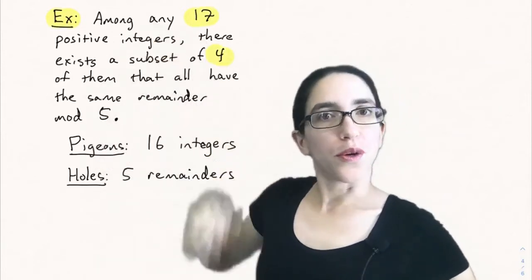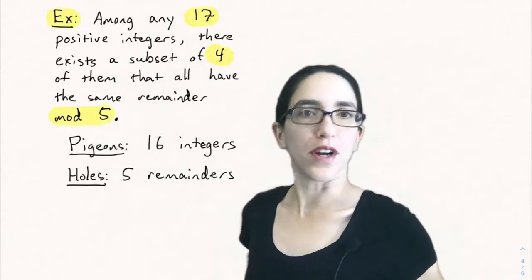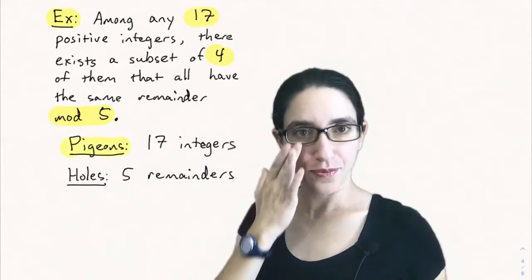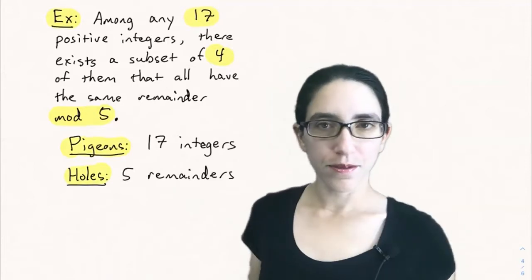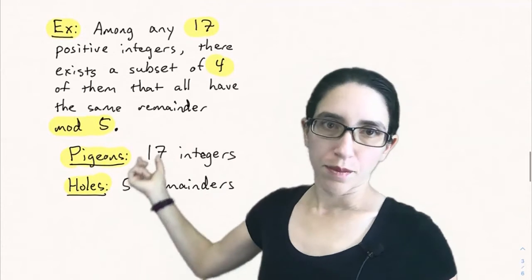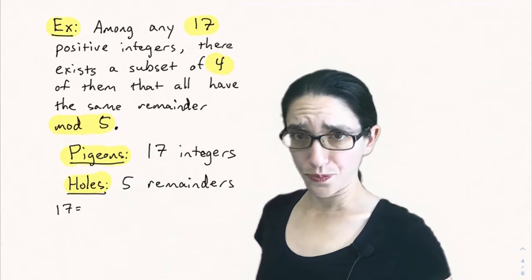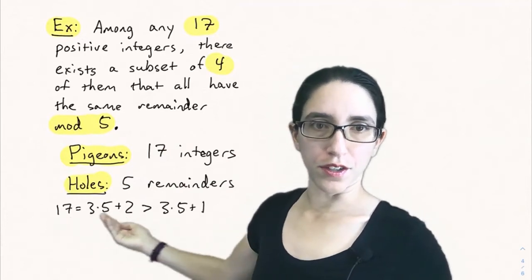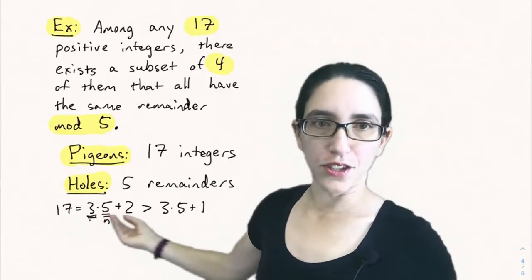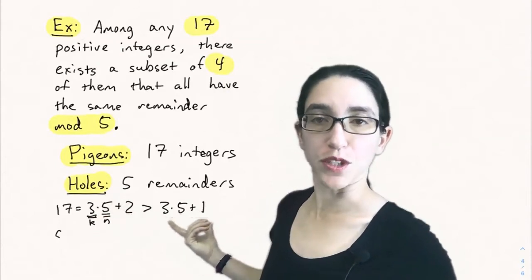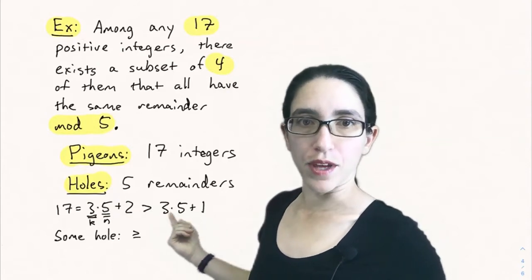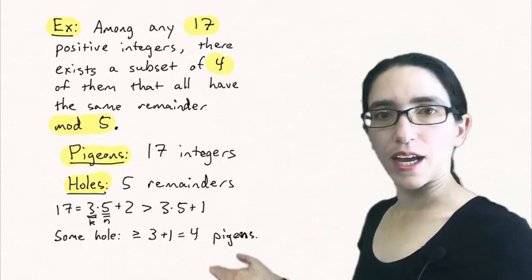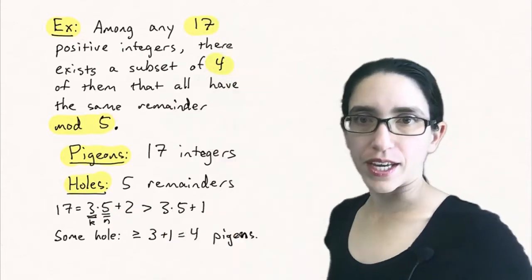Say we want to show that among any 17 positive integers there exists a subset of four of them that all have the same remainder when divided by five. The pigeons are the 17 integers and the holes are the five remainders mod five. Since 17 equals three times five plus two, which is greater than three times five plus one, by version two of the pigeonhole principle some hole must contain at least three plus one equals four pigeons — meaning some remainder class mod five contains at least four of the integers.